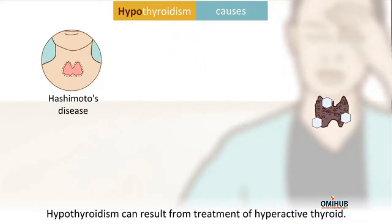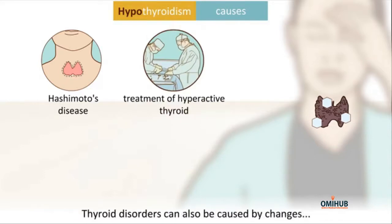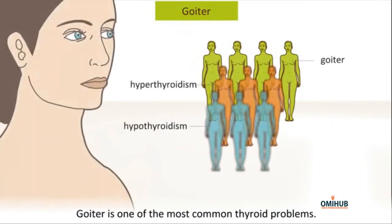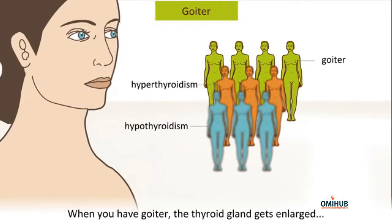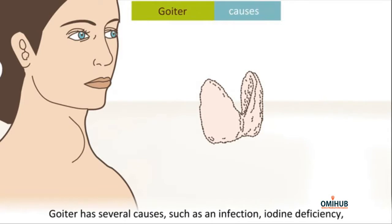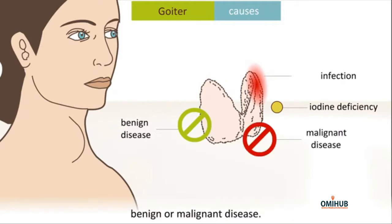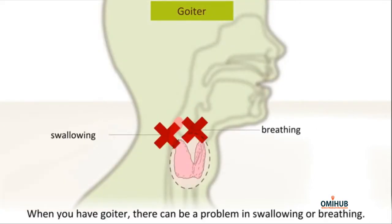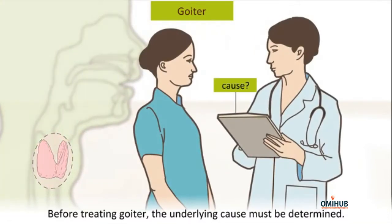Hypothyroidism can also result from treatment of a hyperactive thyroid. Thyroid disorders can also be caused by changes in the structure or form of the thyroid. Goiter is one of the most common thyroid problems — when you have goiter, the thyroid gland gets enlarged and there is visible swelling in the neck. Goiter has several causes such as infection, iodine deficiency, or benign or malignant disease, though malignant disorders are extremely rare.